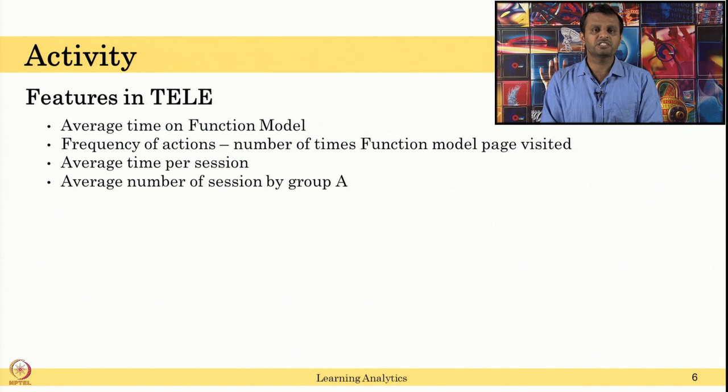Also, you can compute features like average time per session. What is average time a student is spending per session? And is it different from group A to group B? Suppose you have two sets of groups, one is control group or experimental group, and you might be introducing a new intervention in the OELD for group B, then you want to see whether this recommendation or intervention improves students' average time spent on the OELD.